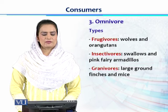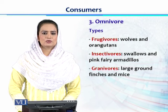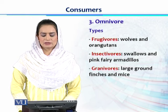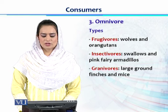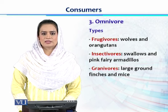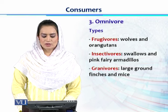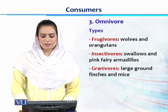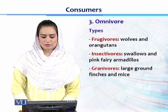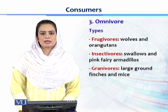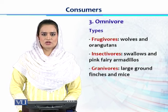Omnivores have three different types, though they are not limited to these three. Fujivores depend on plants or fruits as a second food choice other than animal-based food — for example, wolves and orangutans. Insectivorous consumers use insects as a second choice other than animal sources — for example, swallows and armadillos. Granivorous consumers use grains or seeds as a second food choice — for example, finches and several other birds.